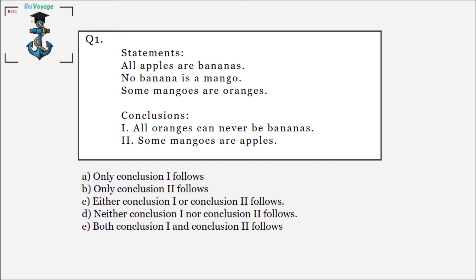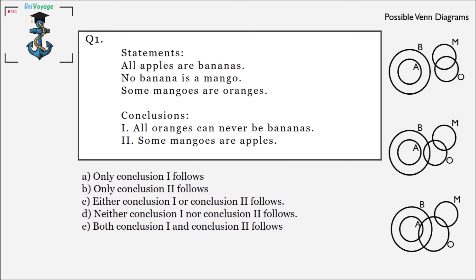Try to draw a Venn diagram on your own and then look at the possible Venn diagrams I have made. These are three Venn diagrams I have made — and these are not the only possible ones, there can definitely be more — but I assume these were enough to solve the question.